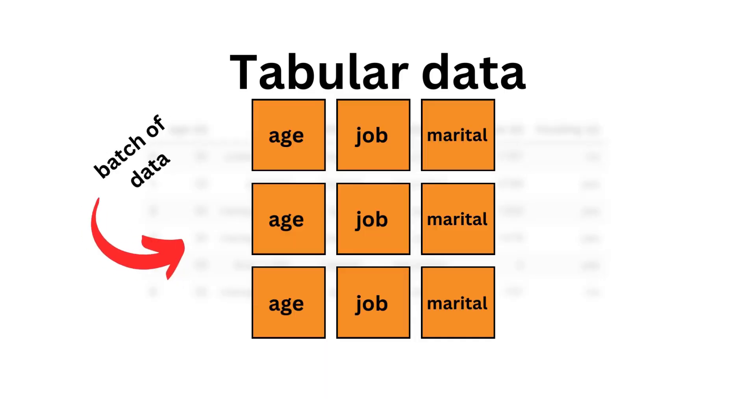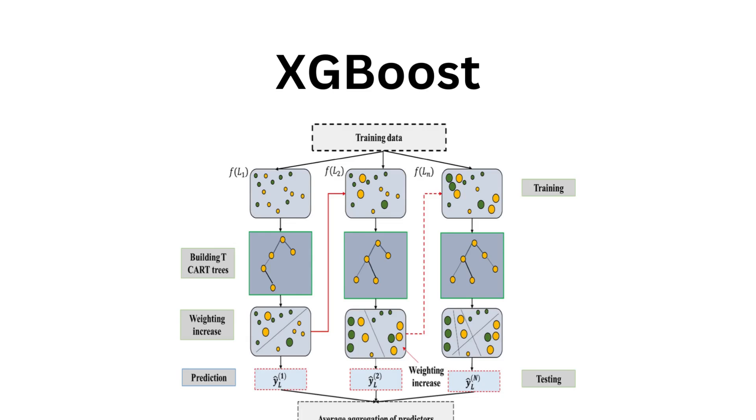Most usually, tabular data are fed into a neural network as a matrix where multiple rows or batch of data are fed at once. One thing to note is for tabular data, XGBoost or Random Forest, machine learning classifiers, usually outperform neural networks, especially for medium-sized data sets.